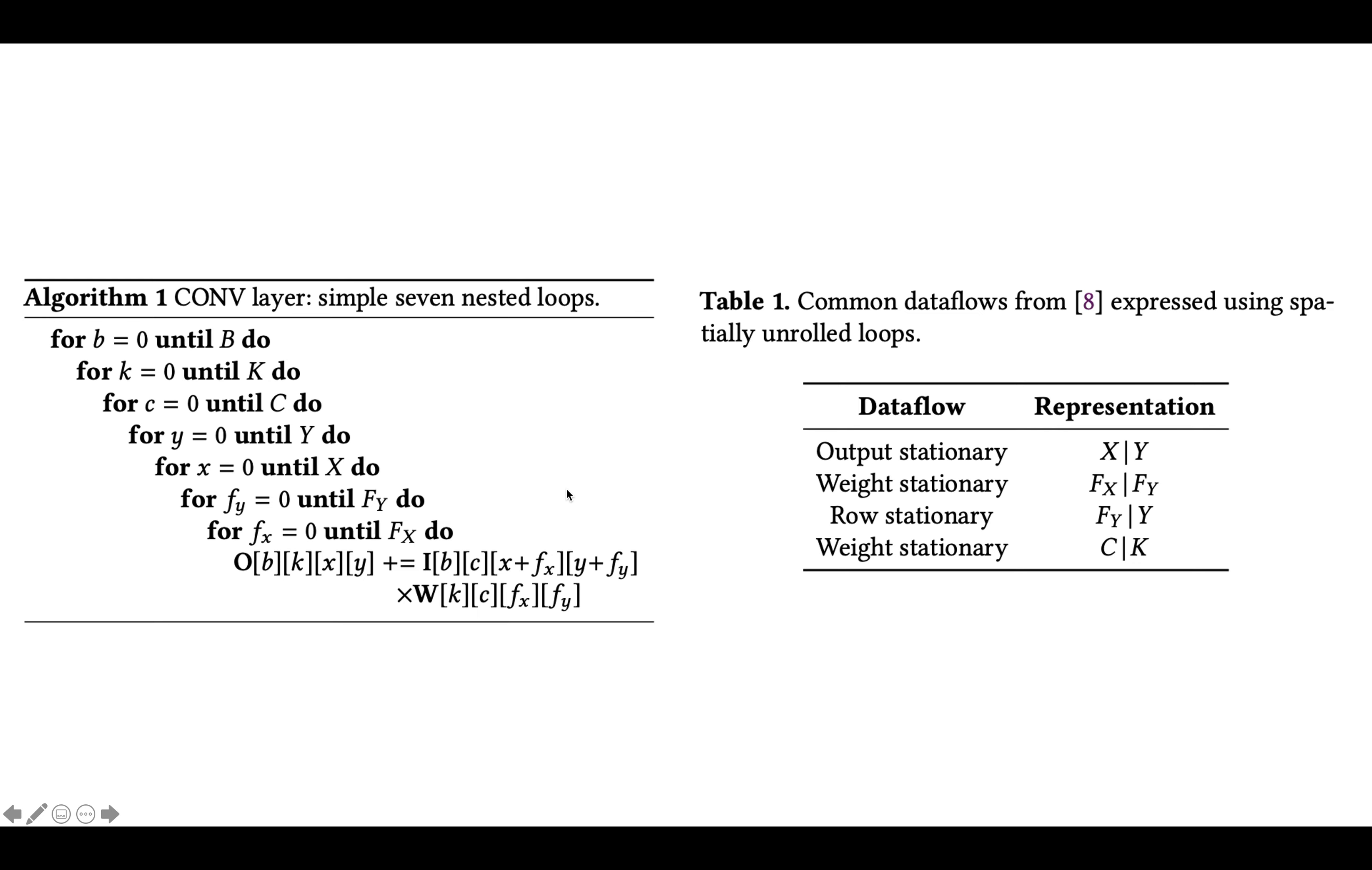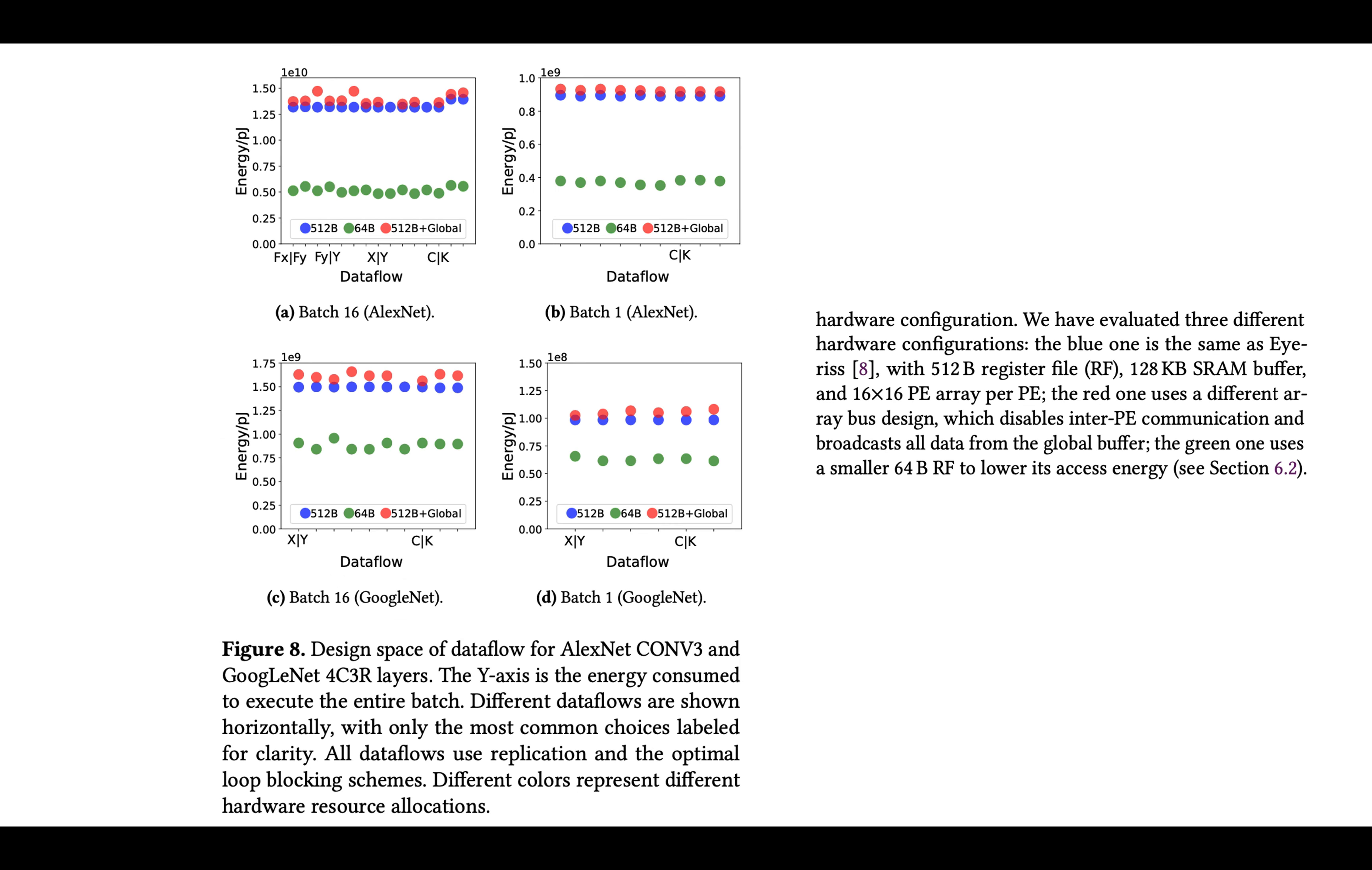And so with this data flow classification, they come up with a design space for different data flows. And here's a figure where they basically show each row is a different layer. So conv3 from AlexNet, and this row is 4c3r from GoogleNet. And then the columns are batch sizes. This is batch size one, batch size 16.